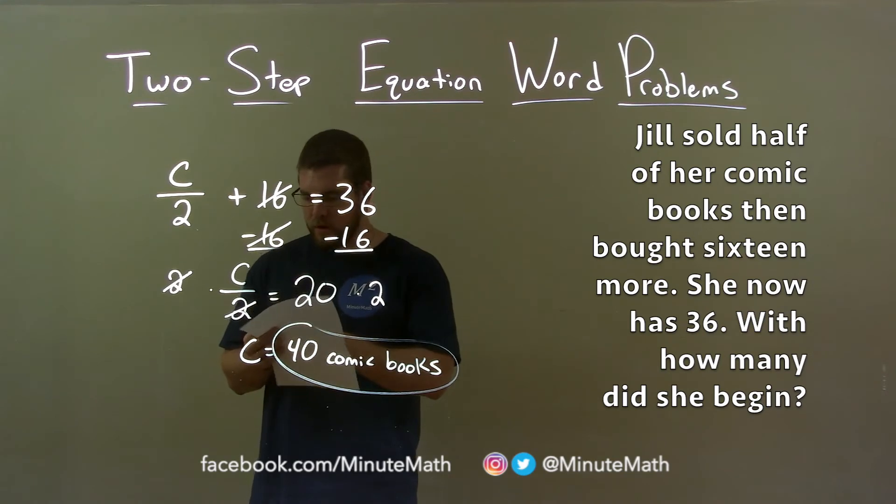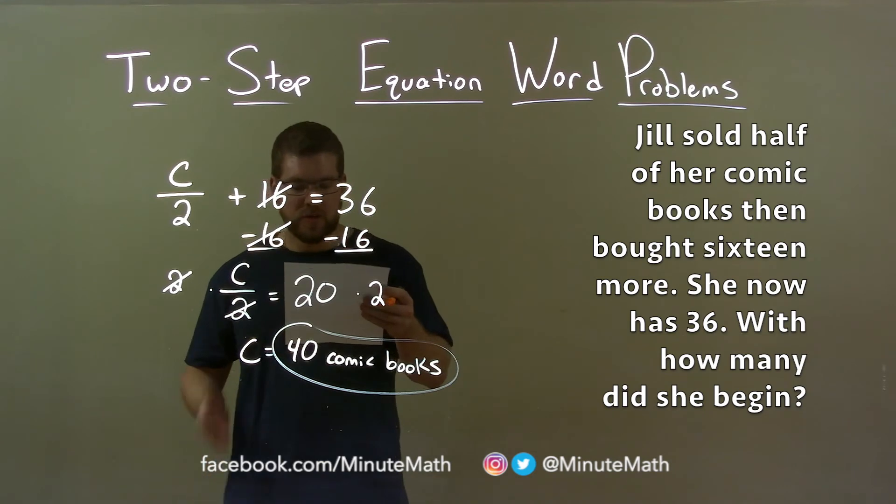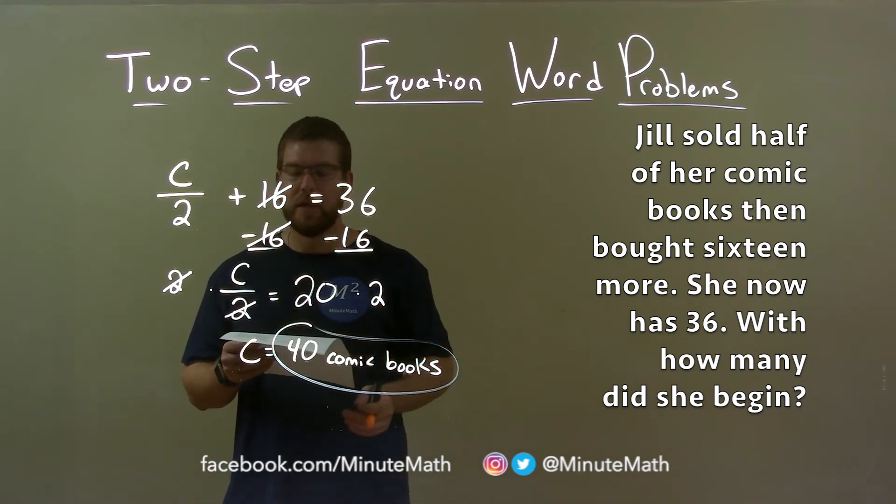So quick recap. We're given the word problem here. Jill sold half of her comic books and then bought 16 more. She now has 36. With how many did she begin?